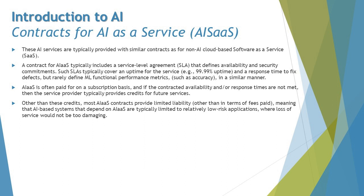A contract for AI as a Service typically includes a Service Level Agreement (SLA) that defines availability and security commitments. Such SLAs typically cover uptime for the service up to 99.99% and a response time to fix defects, but may not always define ML functional performance metrics such as accuracy. These SLAs give the business assurance that services will be available all the time, with consistent support and a defined turnaround time for any issues.